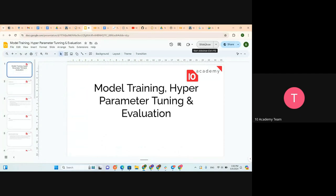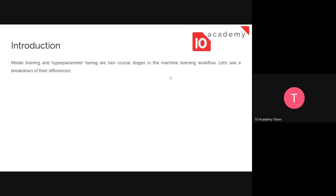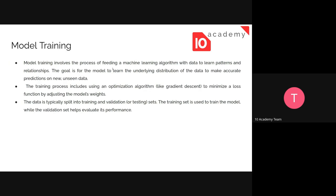Today we will be covering model training, hyperparameter tuning, and evaluation. The goal of using machine learning models is to get an efficient result or a good prediction. Model training and hyperparameter tuning are two crucial steps in the machine learning workflow in order to have the output we want.